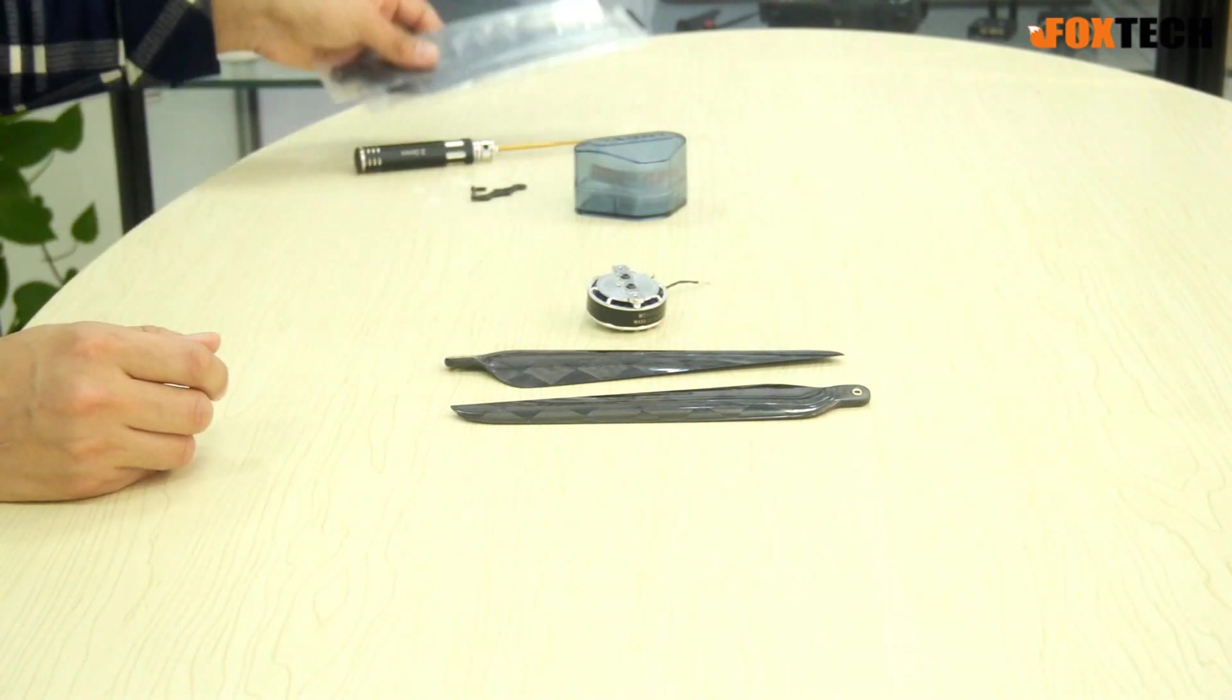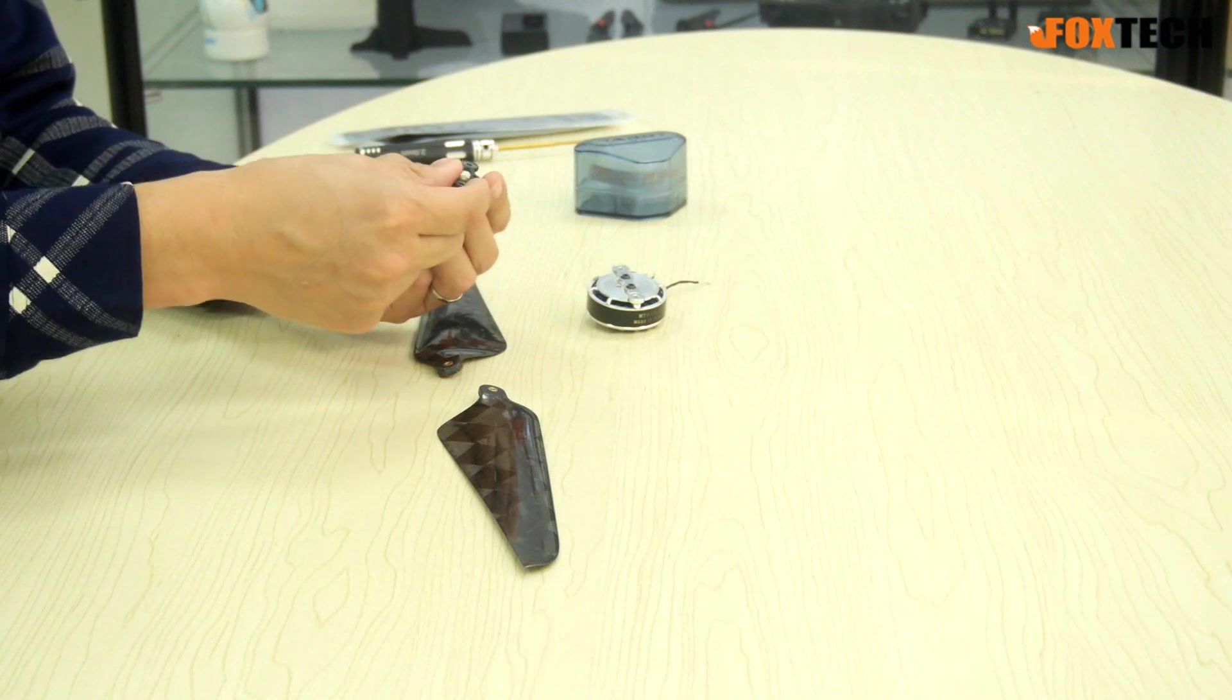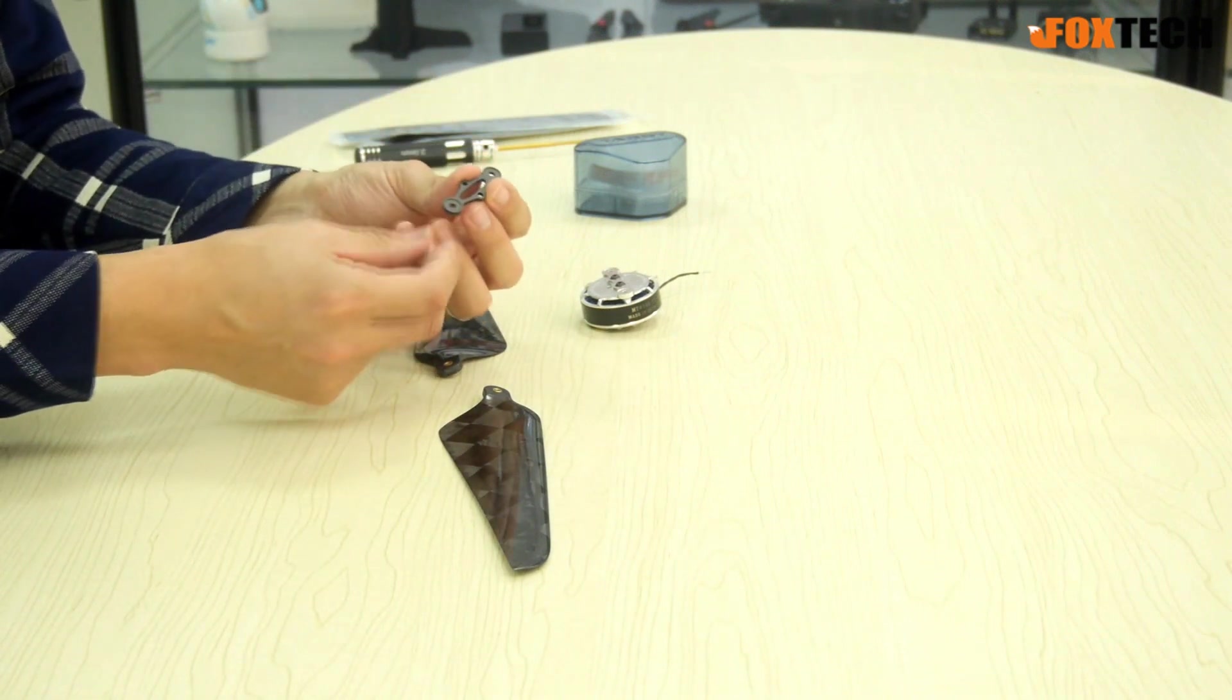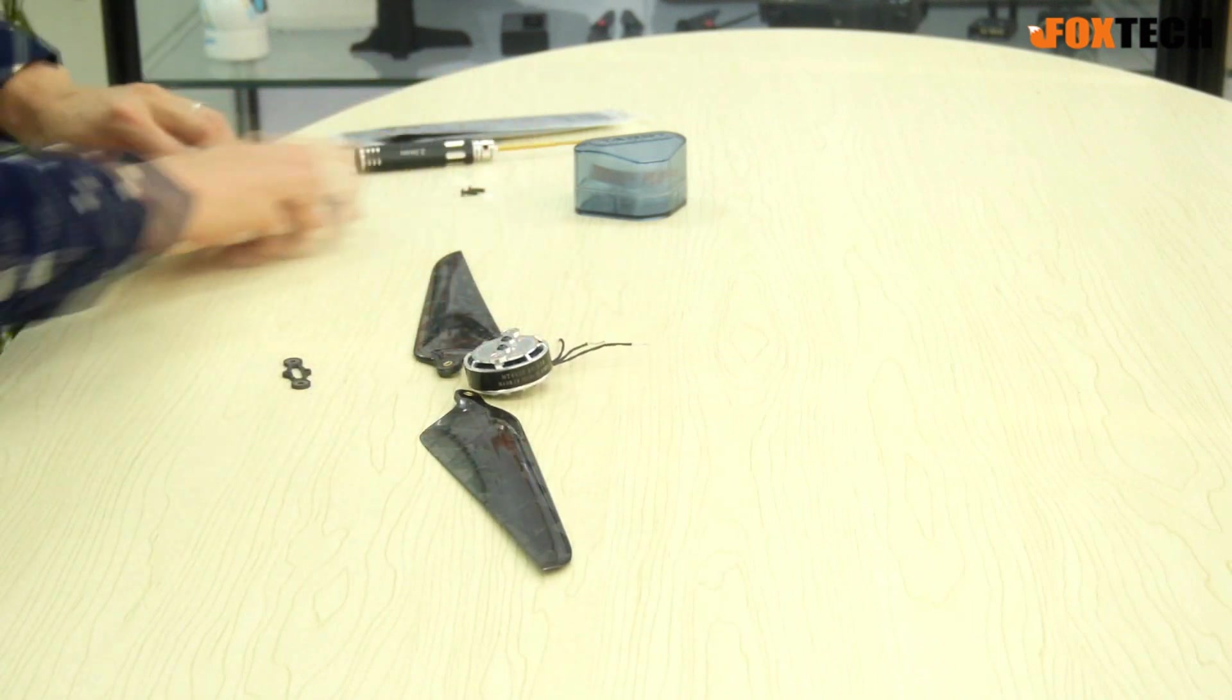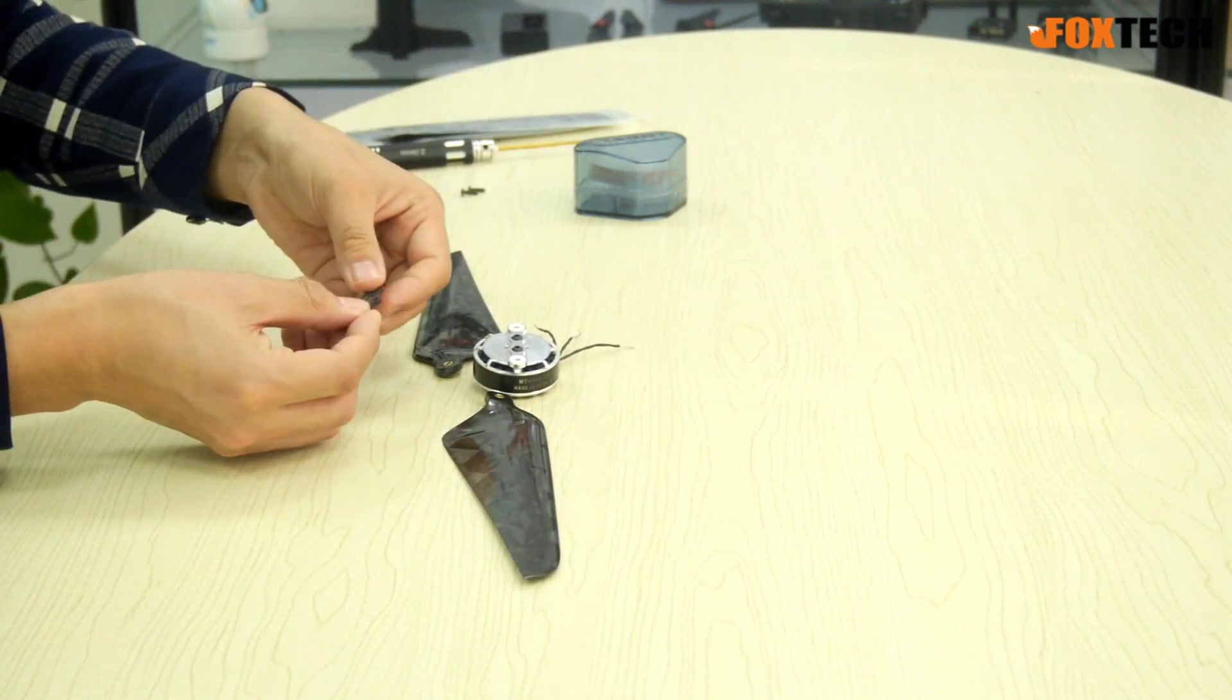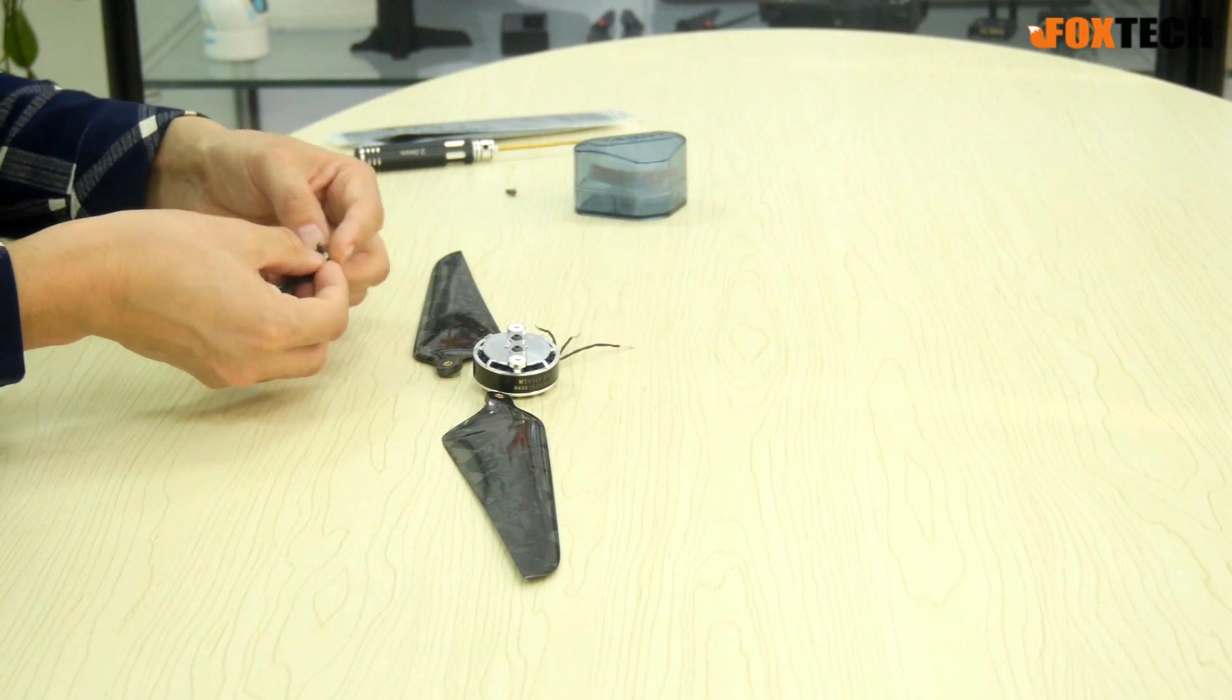Now I'm going to show you how to mount the propeller on the motor. Each motor comes with a folding propeller adapter made of carbon fiber, super light and super high strength. What you have to do is find some nylon washers that come with the motor and mount them on the folding adapter. Then insert the screws in.